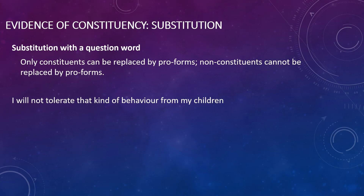Let's look at another kind of evidence for constituency — substitution with a question word. This type of evidence draws from the fact that in English, when asking questions, we often use WH words: who, what, where, when, how, etc. These WH words give a clue as to the constituents we might be dealing with.